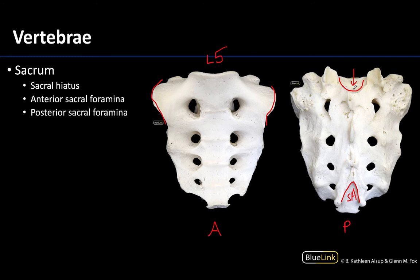The sacral canal is just an extension of the vertebral canal. The sacral hiatus is not a pathology — this is something you will see in most individuals. There are also very prominent sacral foramina: anterior sacral foramina on the front side, and posterior sacral foramina on the back. They are continuous with one another. There are typically four pairs of sacral foramina, which allow the exit of the ventral and dorsal primary rami from the sacral levels.